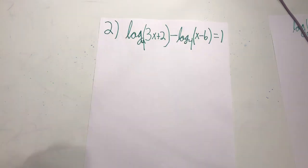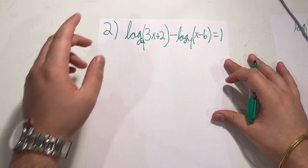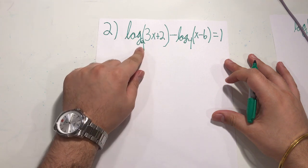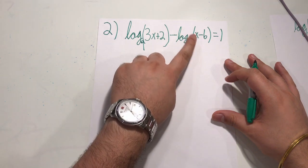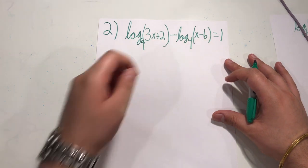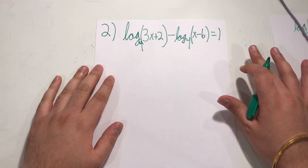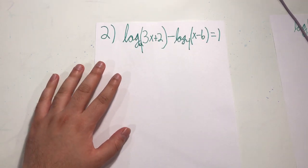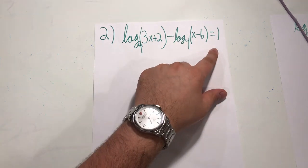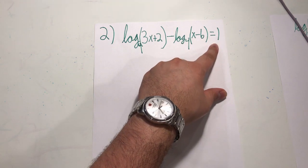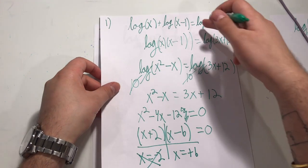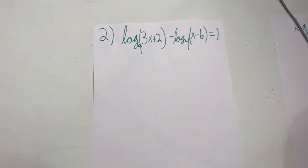Let's move on to the second example. We have logarithm base 4 of 3x plus 2, minus logarithm base 4 of x minus 6, all equal to 1. The difference between this and the last problem is that here we have a term that's just 1 — something that isn't a logarithm. So we'll need to set all our logarithms on one side and solve that way.